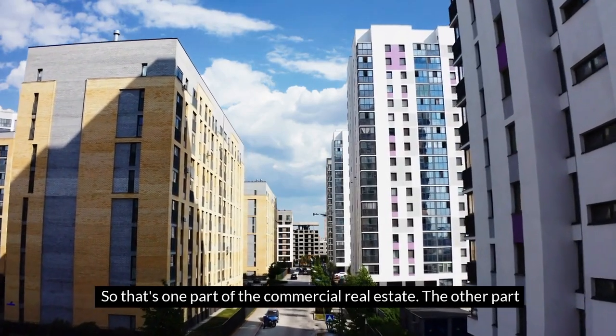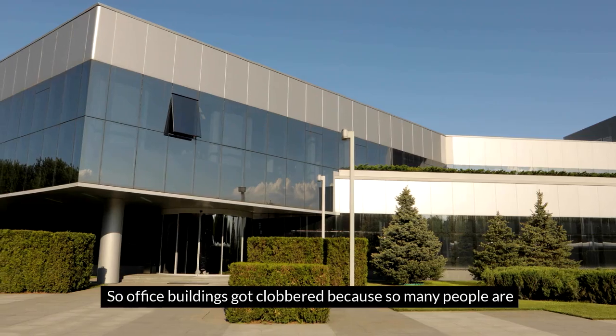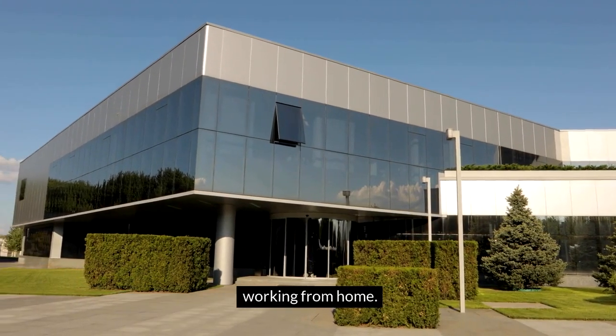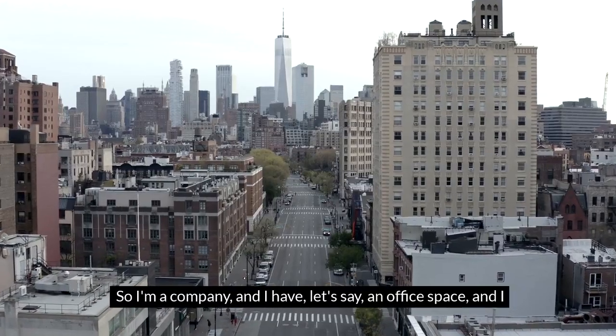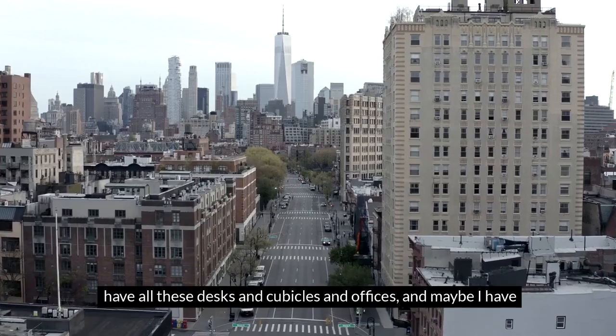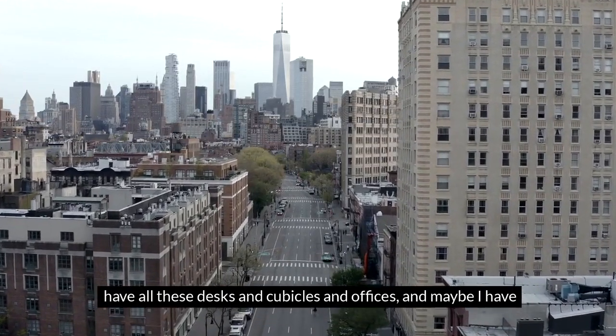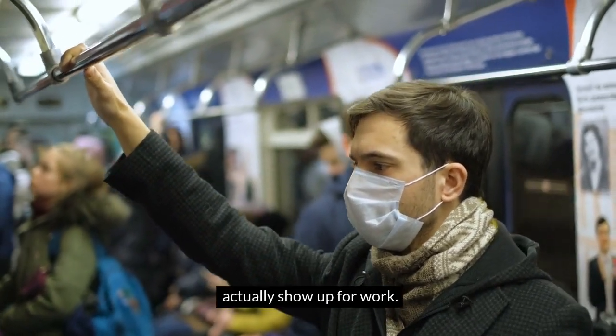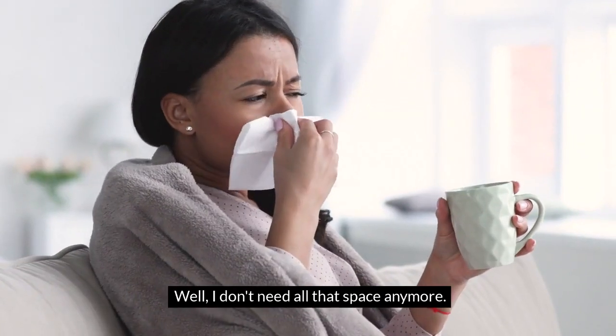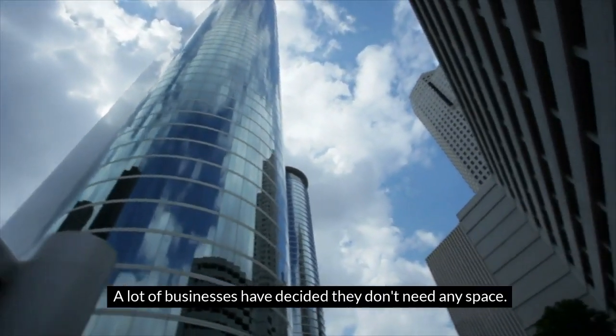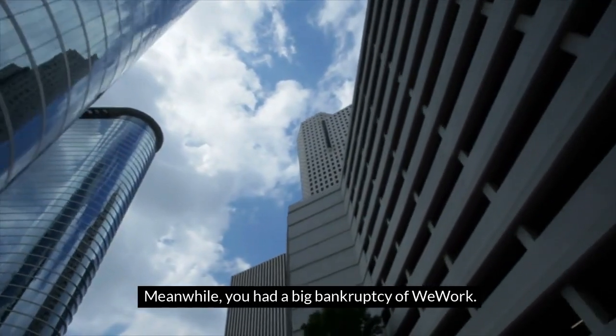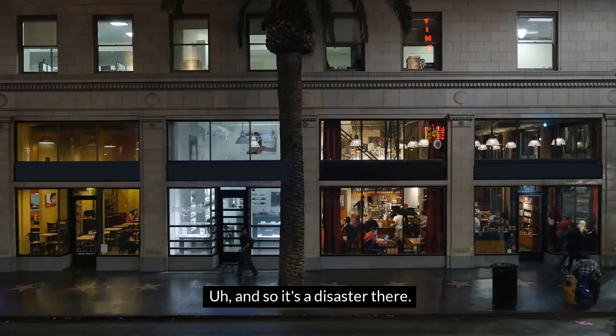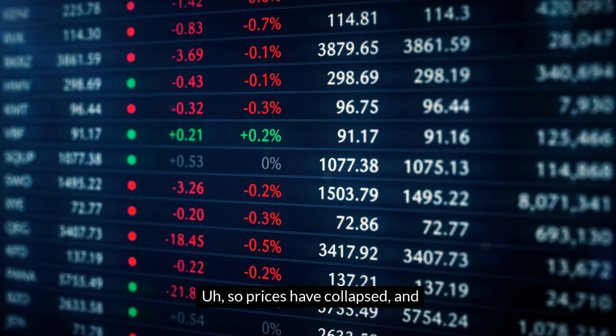The other part is office buildings. Office buildings got clobbered because so many people are working from home. A lot of that started from COVID. So I'm a company and I have an office space with all these desks and cubicles and offices. Maybe I have enough space for 200 people, but now only 20 or 30 of them actually show up for work—the rest of them are at home. Well, I don't need all that space anymore. A lot of businesses are deciding they don't need any space. Meanwhile, you had a big bankruptcy of WeWork. They had rented all sorts of space which is now on the market for sublease. So it's a disaster there.